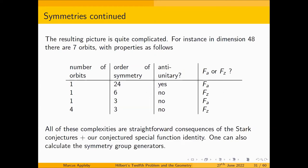The resulting picture is actually quite complicated. For example, in dimension 48 you have seven orbits: one with symmetry group of order 24, one of order 6, and five of order 3. One has an anti-unitary symmetry, the other six do not. The one with the biggest order symmetry is F_a, next biggest is F_z, and then you have a solitary F_a and four F_z orbits. But with the results I'm describing here, you can actually predict all of this — they're straightforward consequences of the Stark conjectures plus the special function identity, and you can use the conjectures to actually calculate the group generators.